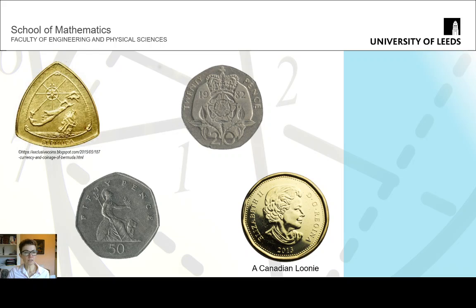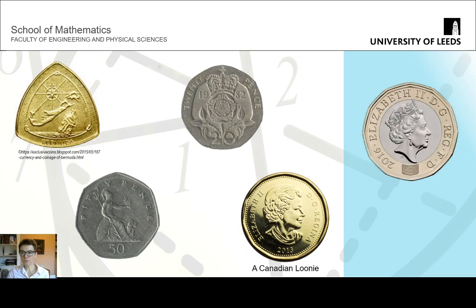You might have noticed that the number of corners here is an odd number, we had 3 and 7 and 11. If you look at the pound coin, it actually has 12 corners, and it is actually not a shape of constant width, and people were concerned that this would cause problems in vending machines, but the difference in width is so small that it actually doesn't matter.